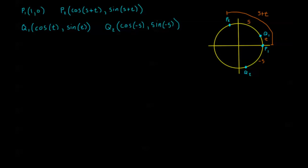Let's see if we can prove one of the cosine identities using the unit circle. I've set up a unit circle here. I've denoted some distance in the positive direction as t, then an additional distance of s — it doesn't matter what these values are, this is just to diagram it out. The whole distance from p1 to p2 around the outside is s plus t, and I've also gone minus s in the negative direction.